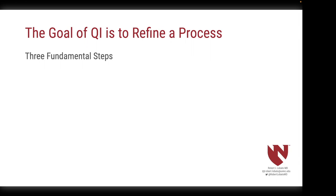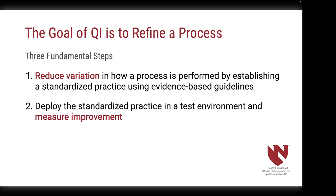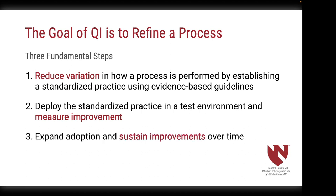The goal of quality improvement is to refine a process. There are three fundamental steps for doing this. Step one is to reduce variation in how a process is performed by establishing a standardized process, usually using evidence-based guidelines. Number two, deploy the new practice in a test environment and measure improvements. Number three, expand adoption of this practice and attempt to sustain improvements over time.